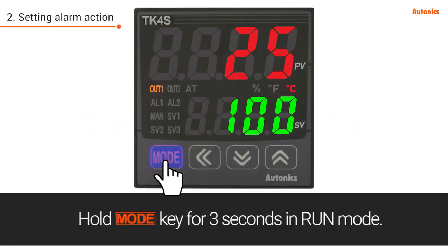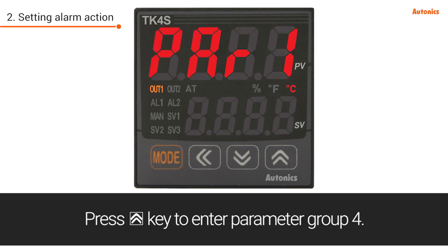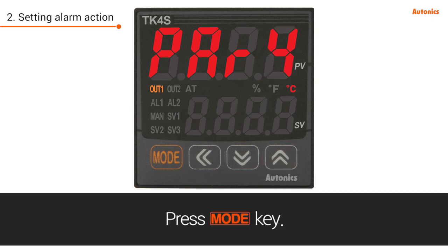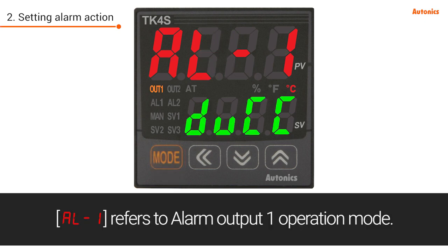Hold the mode key for three seconds in run mode. Press the up key to enter parameter group 4. Press the mode key — JL-1 refers to alarm output 1 operation mode.